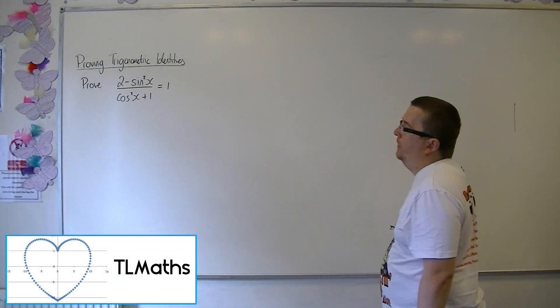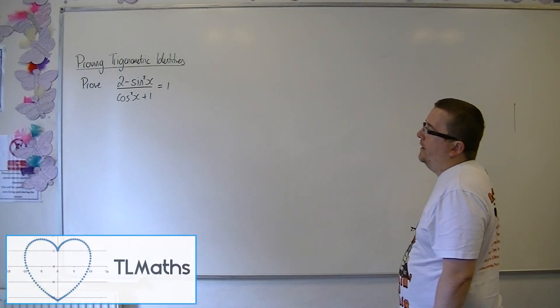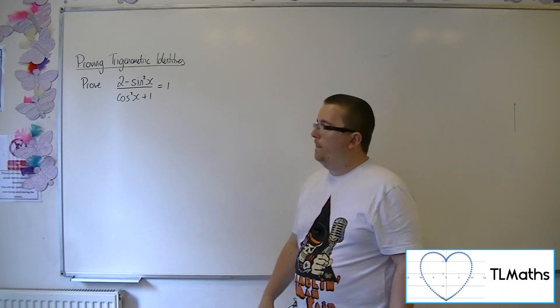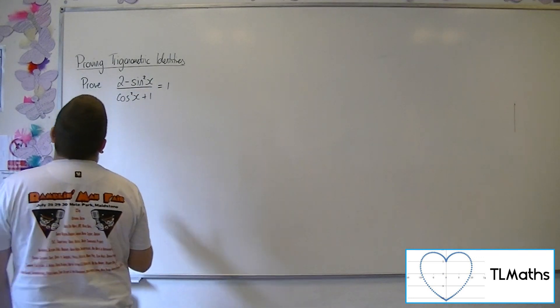Okay, so let's say I want to prove that 2 minus sine squared x over cos squared plus 1 is equal to 1. First things first.